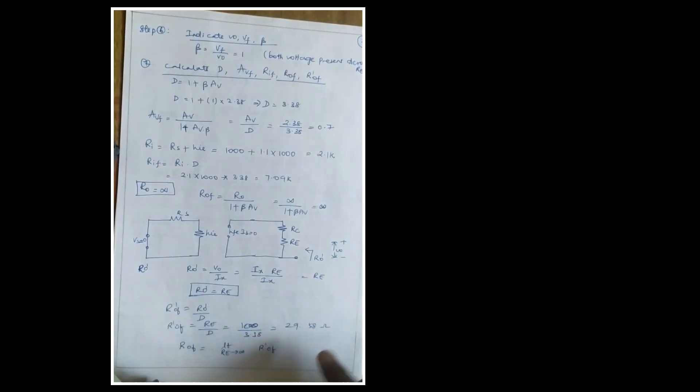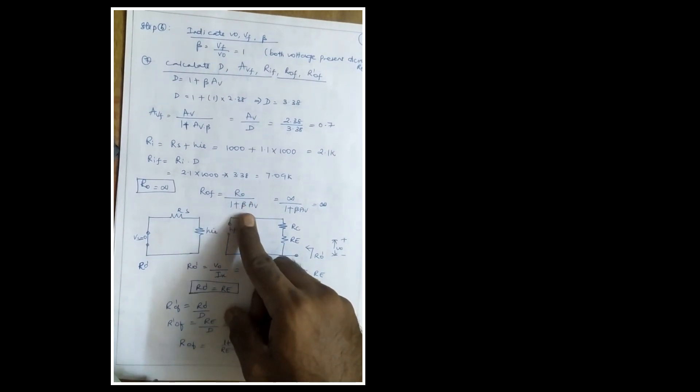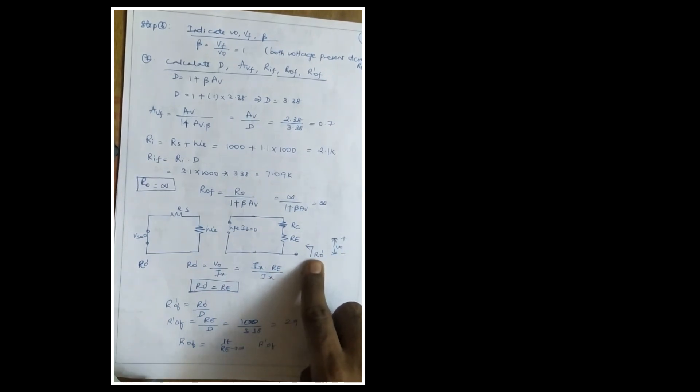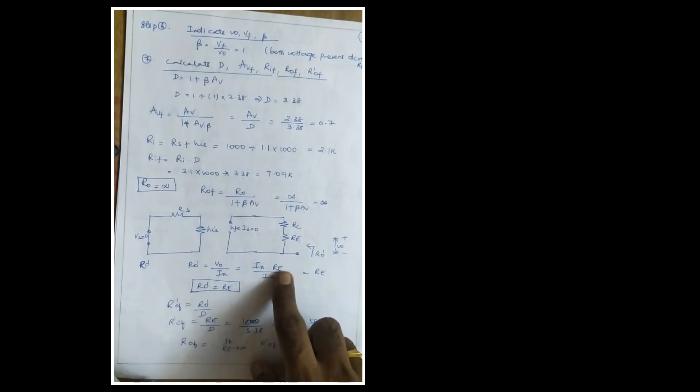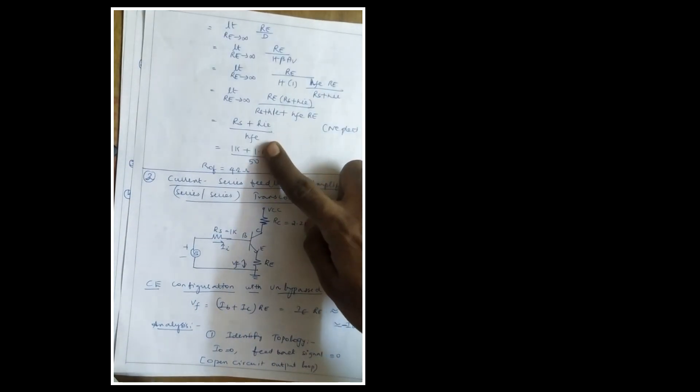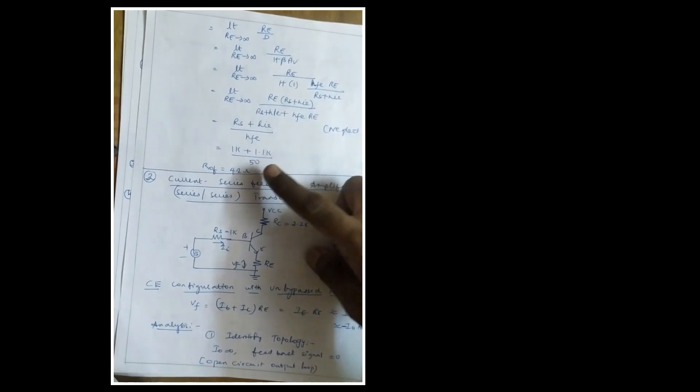Ro = infinity, so Rof = Ro / (1 + beta·Av) = infinity. For R'o (virtual circuit), R'o = Re, so R'of = Re / D = 100 / 3.38 ≈ 29.5 Ω. For Ryf, as Re tends to infinity: Ryf = (Rs + hie) / hfe = (1k + 1.1k) / 50 = 2100 / 50 = 42 Ω.